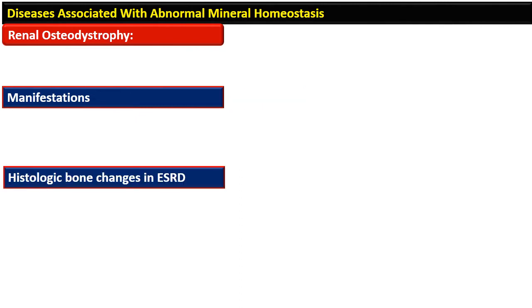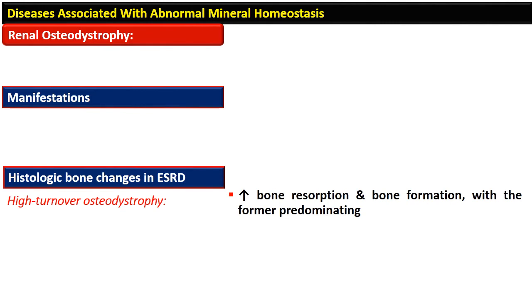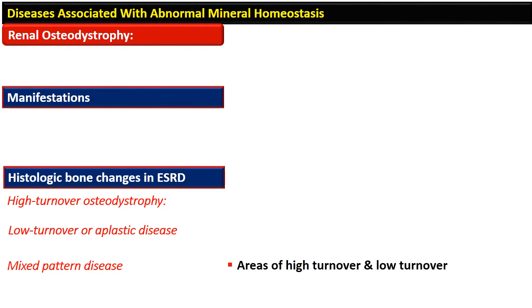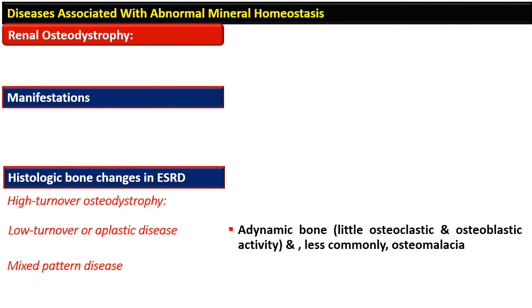Histological bone changes in end-stage renal disease are categorized as high-turnover or dynamic osteodystrophy, low-turnover or adynamic osteodystrophy, and mixed pattern disease. In high-turnover osteodystrophy, bone resorption predominates. In low-turnover disease, there is little osteoblastic and osteoclastic activity. In the mixed pattern, areas of both low and high turnover are present. Adynamic bone disease is seen in 40% of people undergoing haemodialysis and 50% of those treated by peritoneal dialysis.